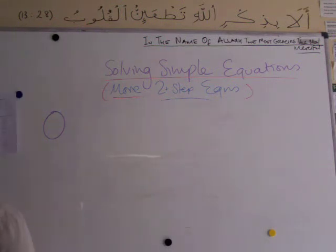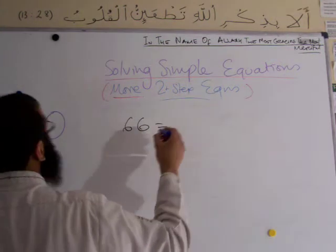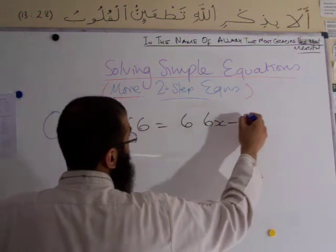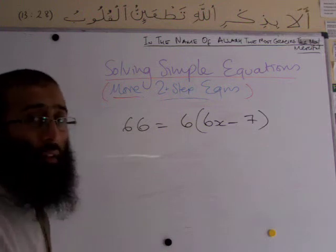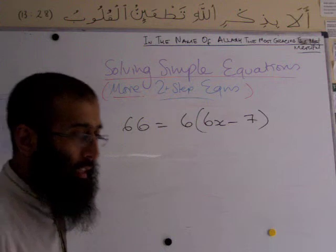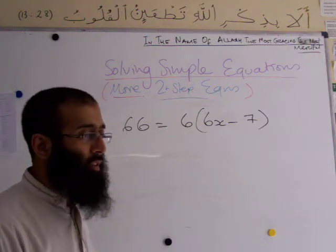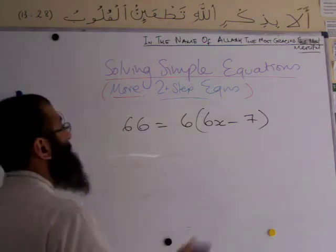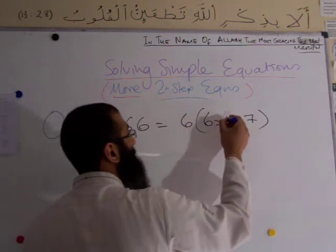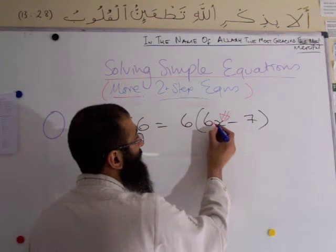Let's look at a three-step question. The equation is 66 equals 6 times bracket 6x minus 7 bracket. Remember the toast analogy — first toast, second toast, third toast. Is eating three toast harder than eating two? No, it just takes more time. Think of these as three toast in one question. Let's start — we must begin at the x and read the equation.